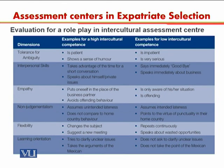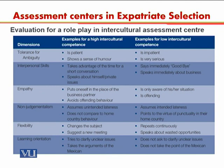The next chart gives a complete list of the way an evaluation is done for a role play in an intercultural assessment center. If you are looking at intercultural ability and the role play in an assessment center, it covers dimensions including learning orientation. These are the six skills evaluated for a person's intercultural adjustment and ability to adjust to a different culture. In the horizontal row, you can see examples for high intercultural competence and examples of low intercultural competence.